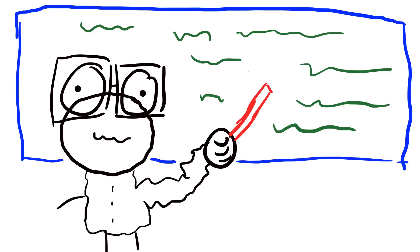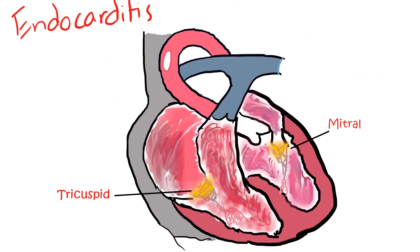Acute endocarditis can affect both damaged and undamaged heart valves. It can bind to fibrinogen and fibronectin on the surface of the heart and other places. It usually affects the tricuspid valve first, because that's the first valve blood goes through entering the heart from IV drug injection — so if you hear a murmur around that area, suspect it. The tricuspid valve is high yield on the exam.